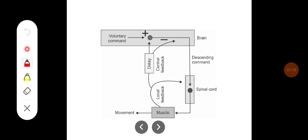This diagrammatic representation shows that a voluntary command from the brain goes to the spinal cord and reaches the muscle which executes the movement. The local feedback mechanisms provide rapid information to the spinal cord for correction of movement. The central feedback, required for precise action, gives its feedback to the brain and other structures to execute precise movement.